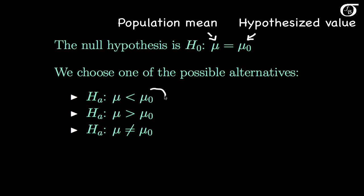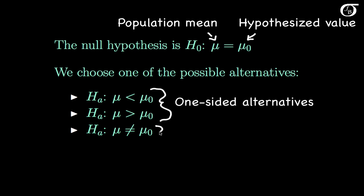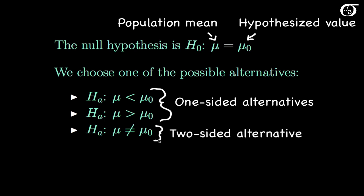The first two are called one-sided alternatives, and the third one is a two-sided alternative hypothesis. We should choose this two-sided alternative hypothesis unless we have a strong reason to be only interested in one of these sides.